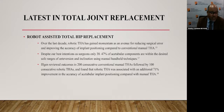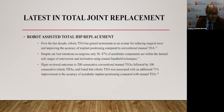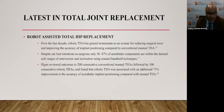Over the last decade, robotic total hip replacement has gained momentum as an avenue for reducing surgical error and improving accuracy of implant positioning compared to conventional manual total hip arthroplasty. Despite our best intentions as surgeons, only 38 to 47 percent of acetabular components are within the desired safe ranges of anteversion and inclination using manual hand-held techniques. Ilgin reviewed 200 consecutive conventional total hip arthroplasties followed by 100 consecutive robotic total hip arthroplasties and found that the robotic approach was associated with a 71 percent improvement in accuracy of acetabular implant positioning.